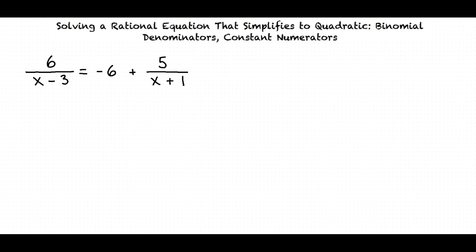The least common denominator is the lowest common multiple of the denominators of the two fractions. In this case, we can see that the denominators of each of the fractions are both different and are binomials. Whenever this is the case, our least common denominator is the product of these two denominators.